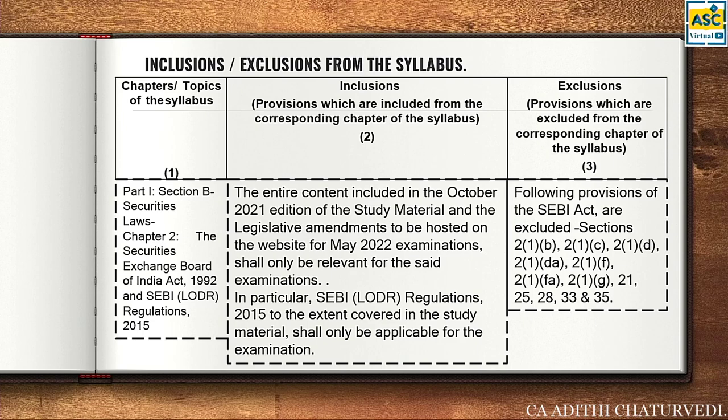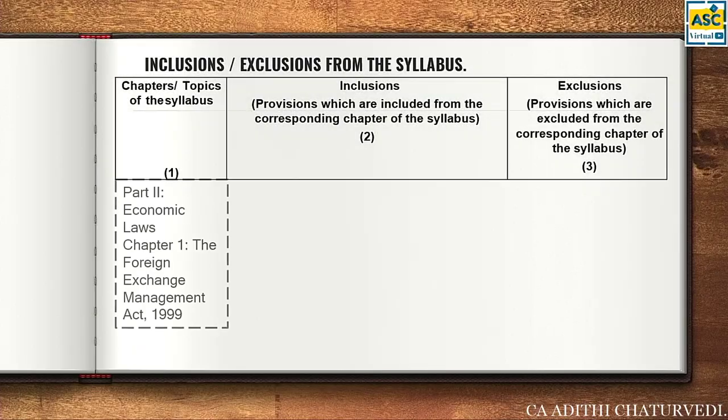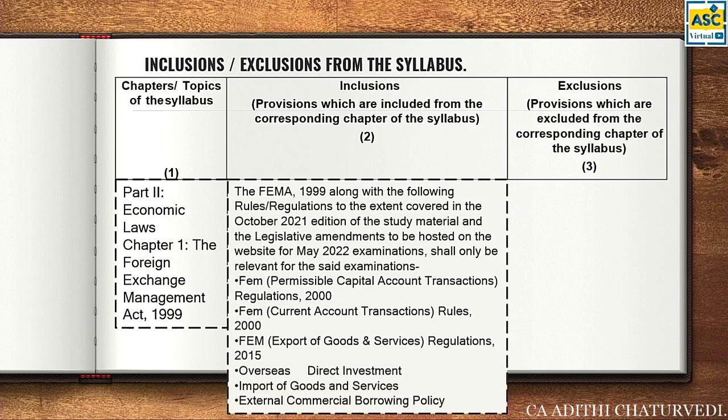Just for your knowledge: 2(1)(b) is the definition of Chairman, 2(1)(c) is definition of existing securities and Exchange Board, 2(1)(d) is definition of Fund, (f) is notification, (g) is definition of prescribed. Importantly, Sections 21, 25, 28, 33, and 35 are excluded: 21 is savings, 25 is exemption from tax on wealth and income, 28 is power to exempt (CG's power), 33 is amendment of certain enactments, and 35 is repeal and savings — these were not there anyway when we learned this chapter.